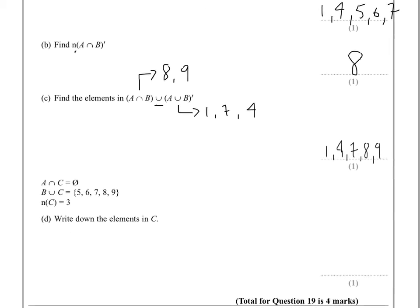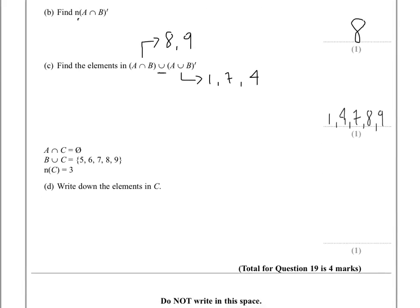Now in part D, we're told a number of things. So the first thing we're told is that A intersection C is the null set. So what that means is A does not intersect with C. B union C gives us the numbers 5, 6, 7, 8, 9. And we know that the number of elements in C is 3. And they want us to write down what those elements are.